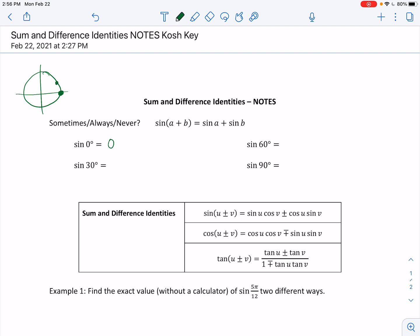30 degrees is somewhere over here. That y value is 1 half. This should be old hat to you. You should be really good at this. 60 degrees, that sine value is root 3 over 2. And then sine of 90 is equal to 1. Okay, so is this sometimes always or never true?